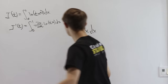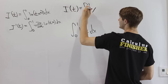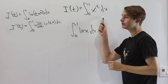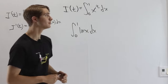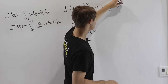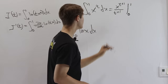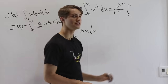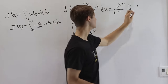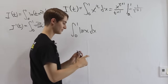So we let i of t equal the integral from 0 to 1 of x to the t dx — an integral we know how to do using the power rule, since t is a constant with respect to x. Applying the power rule gives x to the t plus 1, over t plus 1, evaluated at 1 and 0. Now 0 to the t plus 1 is 0, and 1 to the t plus 1 is 1, so i of t equals 1 over t plus 1.